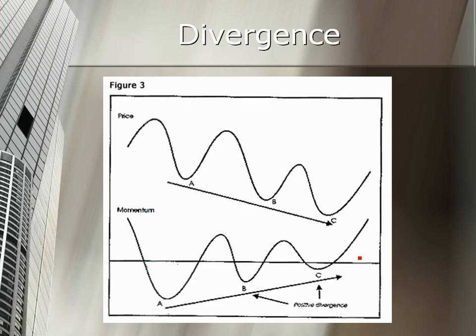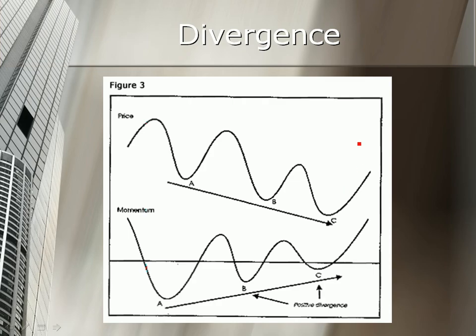The flip side, that was the negative divergence we saw there. The flip side is the positive divergence. Positive divergence works like this. We get a series of higher lows on the indicator, but the price makes lower lows like this.